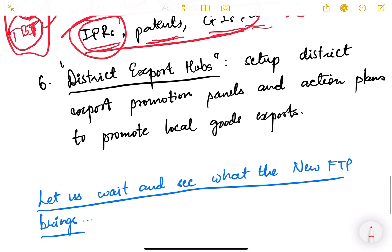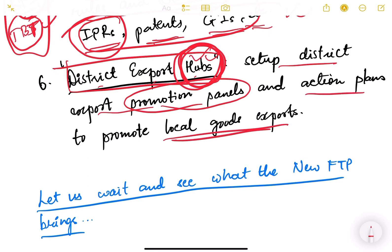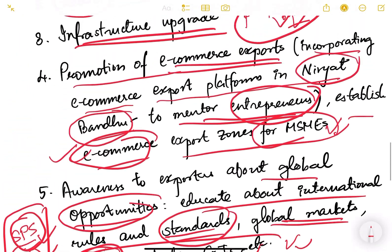We can also expect the government to provide guidelines or incentives to establish district export hubs. Every district has one product they can export, and there should be hubs — areas from where exports will happen and which are given a lot of incentives. Setting up district export promotion panels and action plans to promote local goods exports — for example, if in one district some artifact is very famous, we need to export it to other countries where there is demand, or we can actually generate demand.